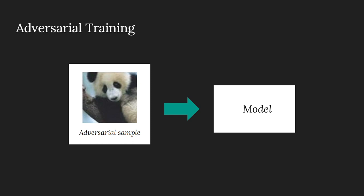So what can we do about adversarial attacks? The solution is called adversarial learning, or adversarial training. In adversarial training, we use adversarial samples to train the system, and then the system learns to identify adversarial samples. It is also important to cross-check the input data and retrain the system often with adversarial samples.